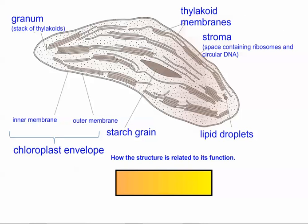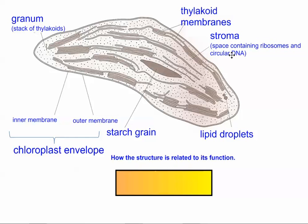We're going to look quickly at the structure of a chloroplast. It's important to know that the chloroplast is roughly the same size as a mitochondria, and also that based on endosymbiotic theory, we think that chloroplasts used to be prokaryotic organisms — they have their own DNA and their own ribosomes.